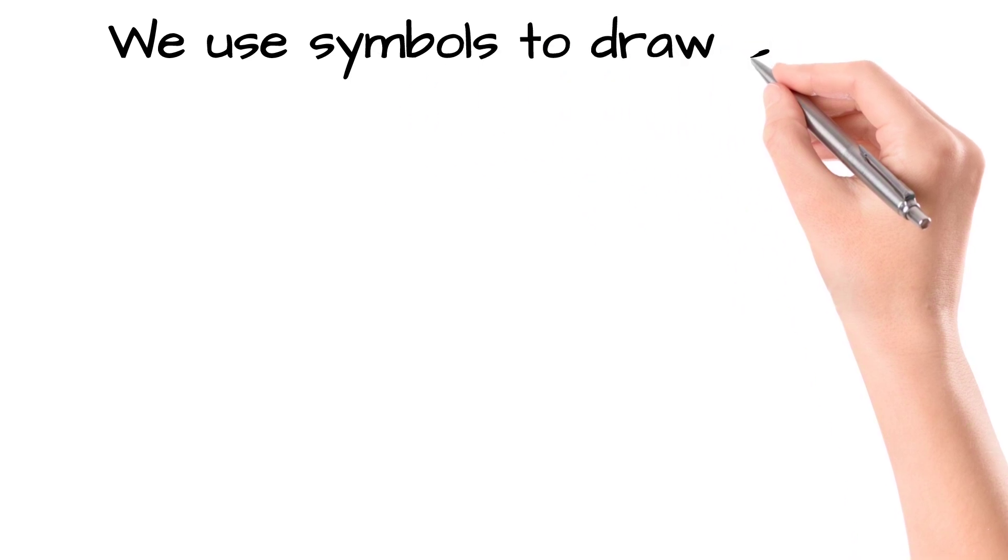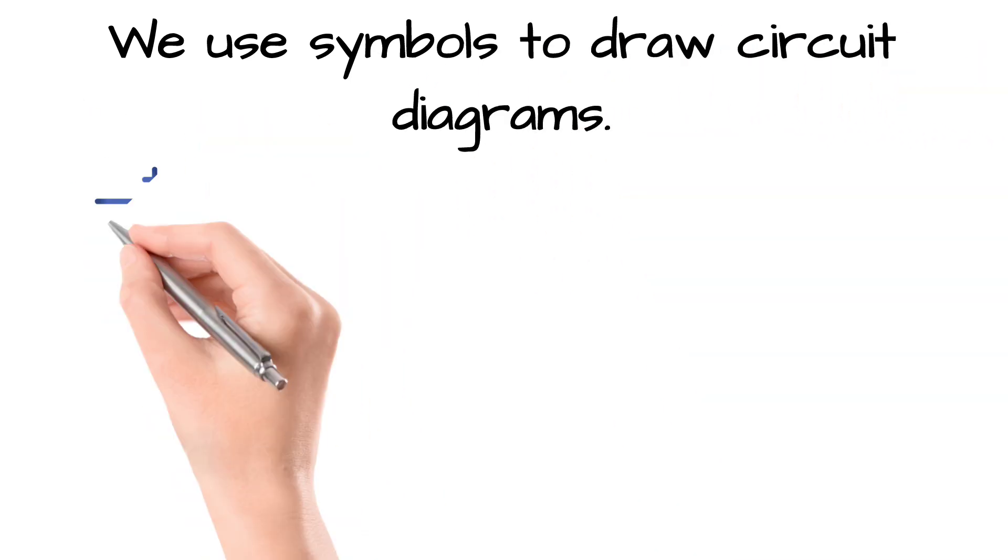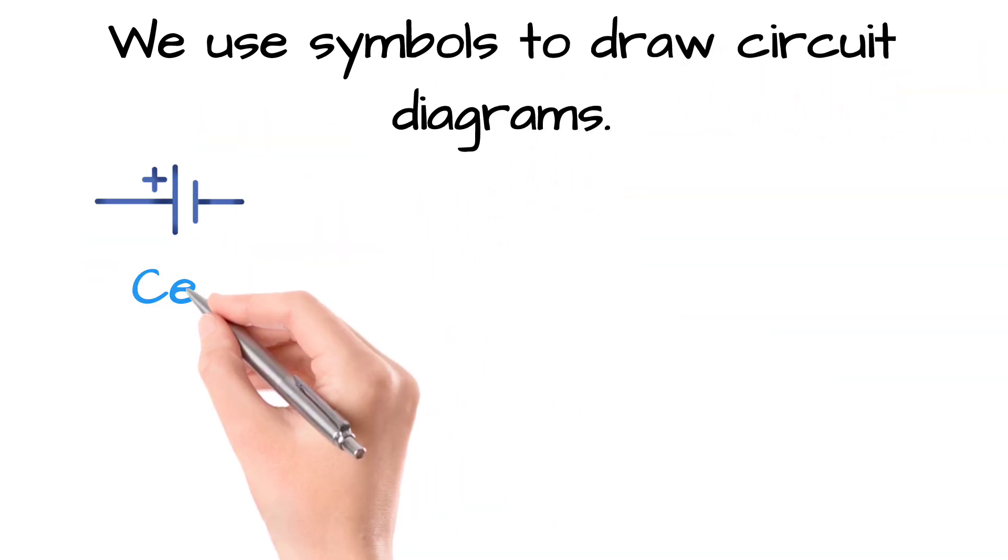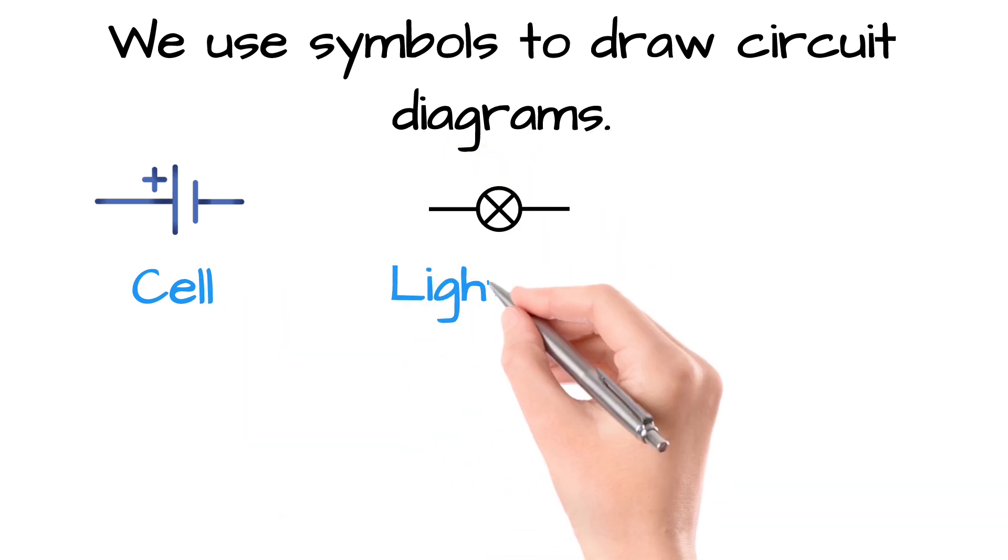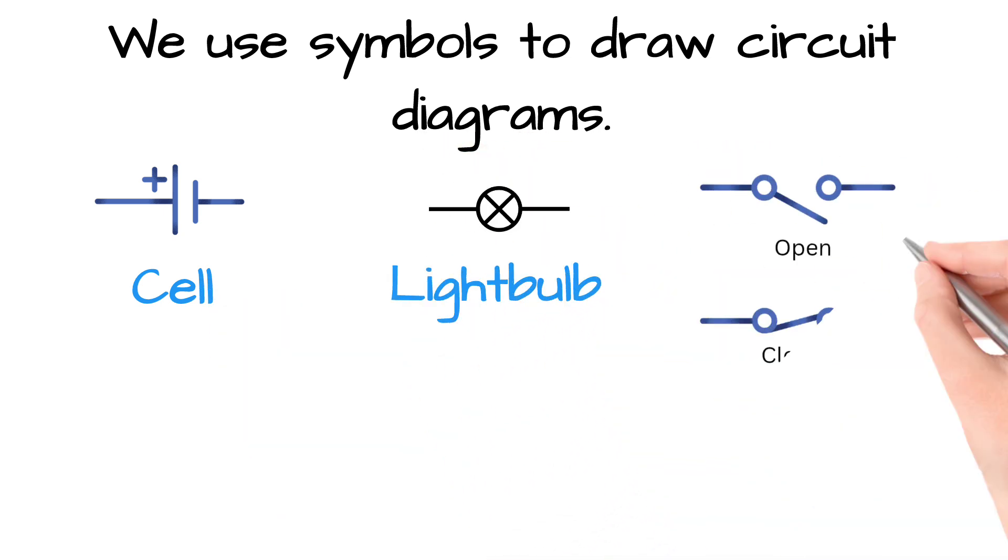To make circuits easy to read and draw, scientists and engineers use symbols to represent each component. A cell is shown by two lines, a bulb by a circle with a cross, a switch by a break in a line, and so on.